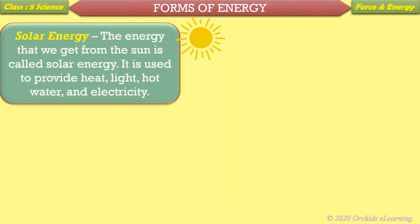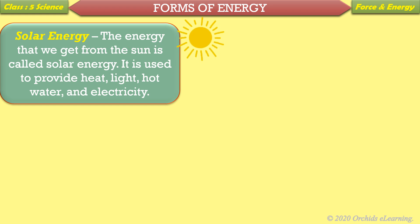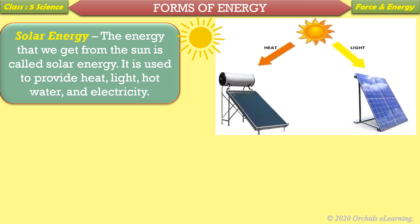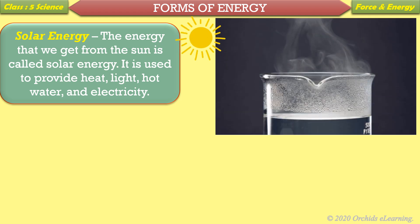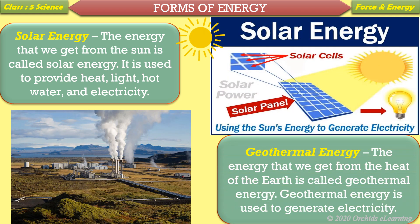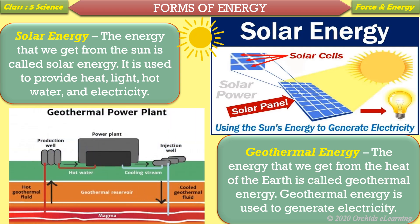Solar energy: The energy that we get from the sun is called solar energy. It is used to provide heat, light, hot water, and electricity. Geothermal energy: The energy that we get from the heat of the earth is called geothermal energy. Geothermal energy is used to generate electricity.